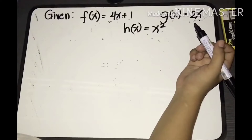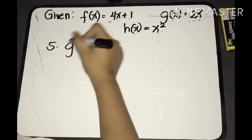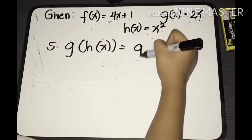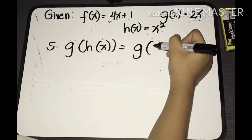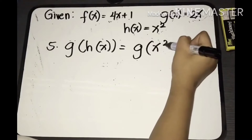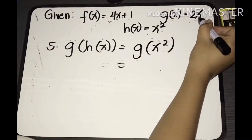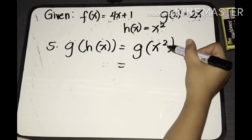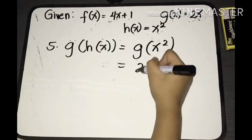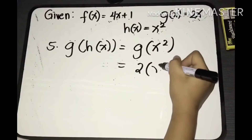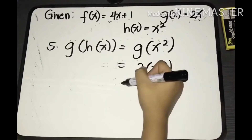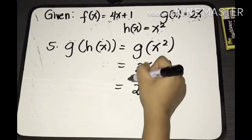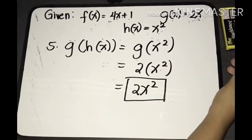For the fifth example, we'll find g of h of x. Copy g, substituting the value of h of x, which is x squared. Look at the function g — we have the variable x, so we substitute x squared into that variable. We'll have 2 multiplied by x squared, which gives 2x squared. That is the answer for g of h of x.